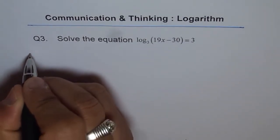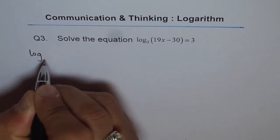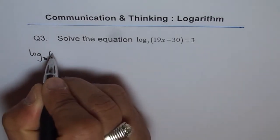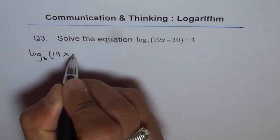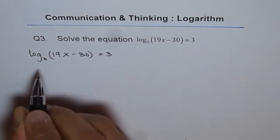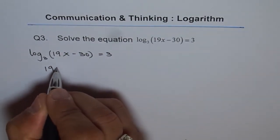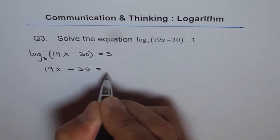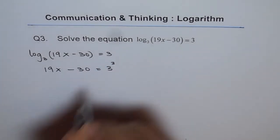So let's rewrite this equation in exponential form. We have log to the base 3 of 19x minus 30 equals 3. In exponential form, it becomes 19x minus 30 equals 3 to the power of 3, correct?